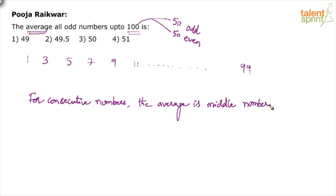If you see, these numbers are consecutive numbers. All these are in some arithmetic progression. Anywhere you find that the numbers are in arithmetic progression, the average is always the middle number. 1, 3, 5, 7, 9, all these are in a rhythm, in a progression. So average will be the middle number.